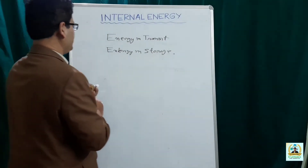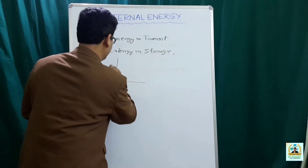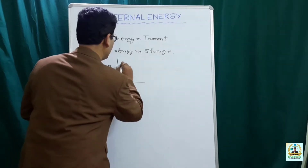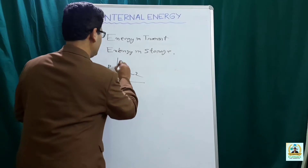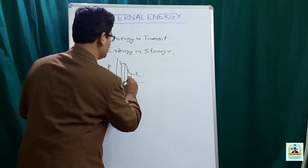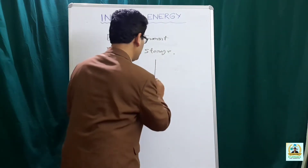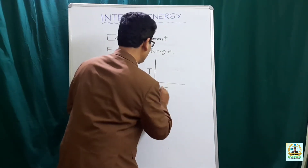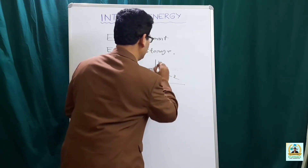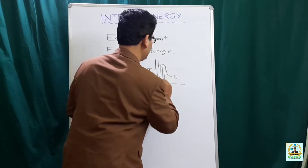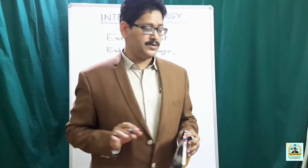The work transfer is represented by the area under the PV diagram — the area under the process curve represents the work transfer. Similarly, when it comes to heat transfer, the area under the TS diagram represents the heat transfer. So these are path functions.